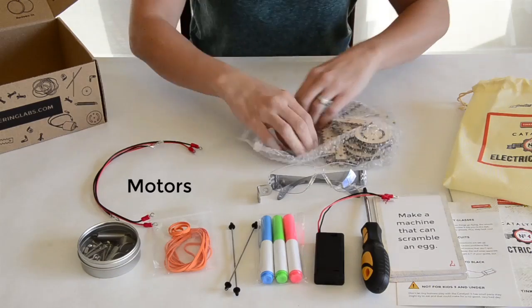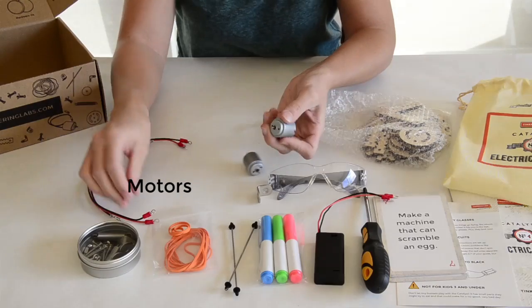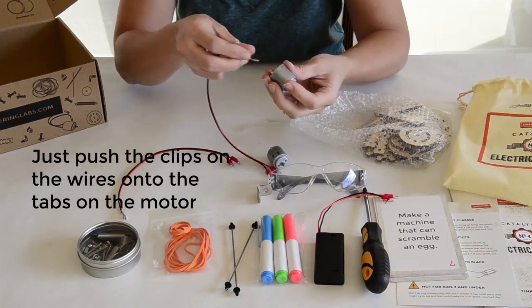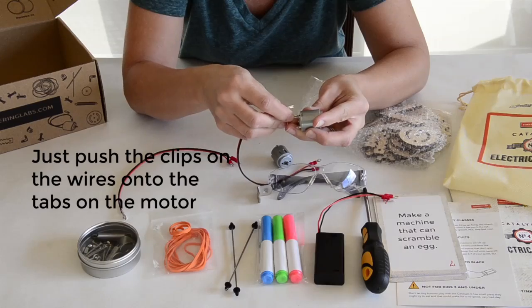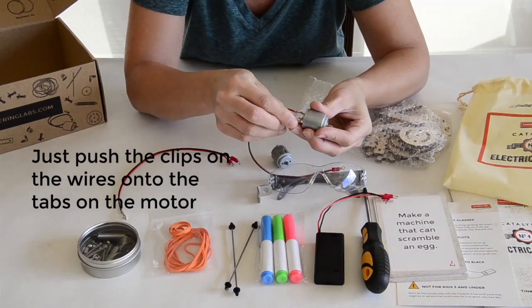Inside here you can see there are two electric motors included, and I'm going to show you how to attach these. You just take the clips on these wires and attach them to the tabs on the motor.